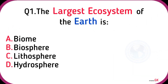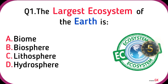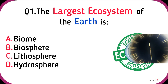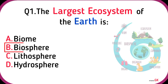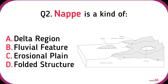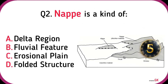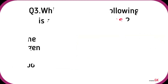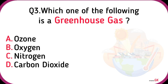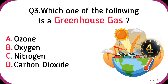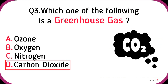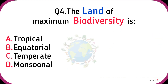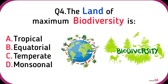The largest ecosystem of the earth is the biosphere. NAP is a kind of folded structure. Which one of the following is a greenhouse gas? Carbon dioxide.